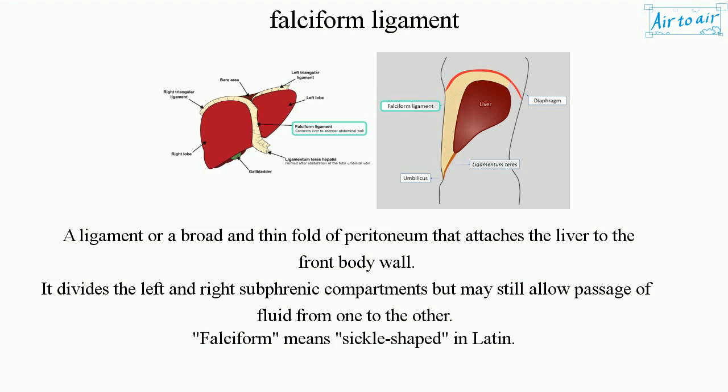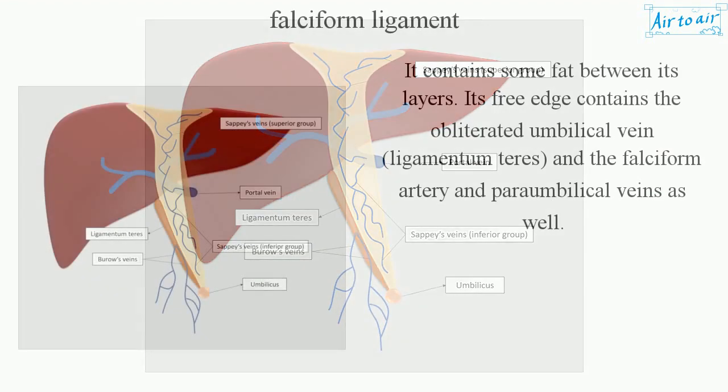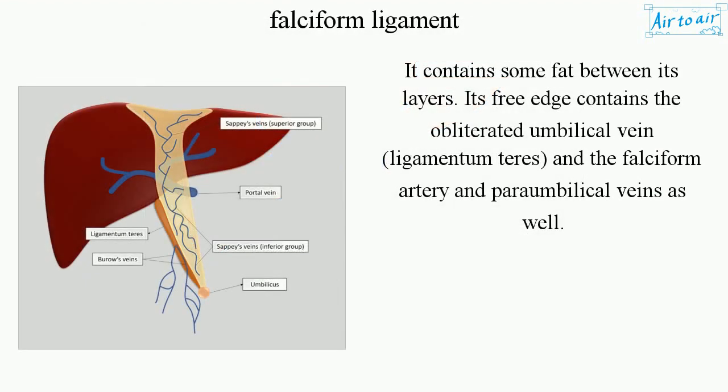Falciform means sickle-shaped in Latin. It contains some fat between its layers.